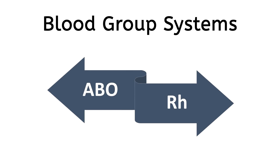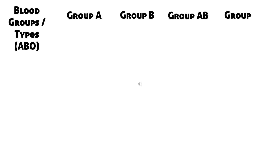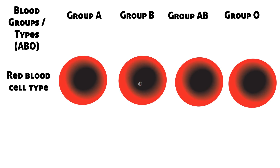Blood grouping systems in humans are of many types, but the main ones are the ABO system and the RH system. In the ABO system, there are four types of blood groups, also known as blood types: blood group A, blood group B, blood group AB, and blood group O. People with different blood groups have different types of red blood cells.